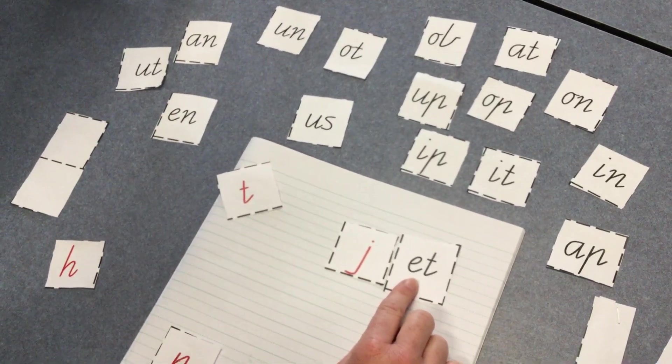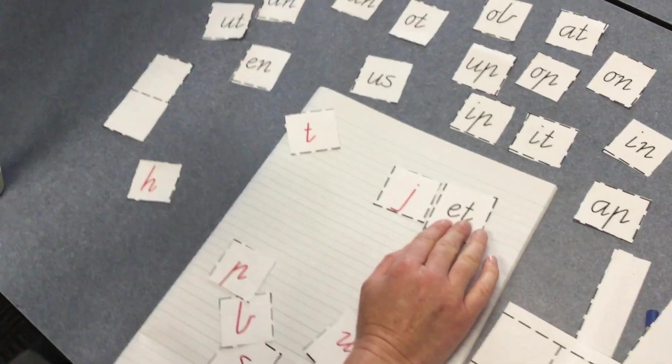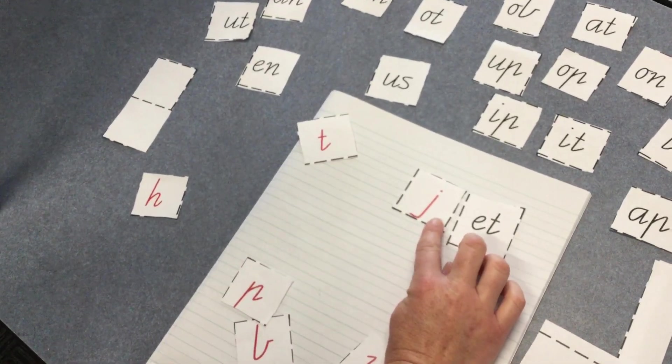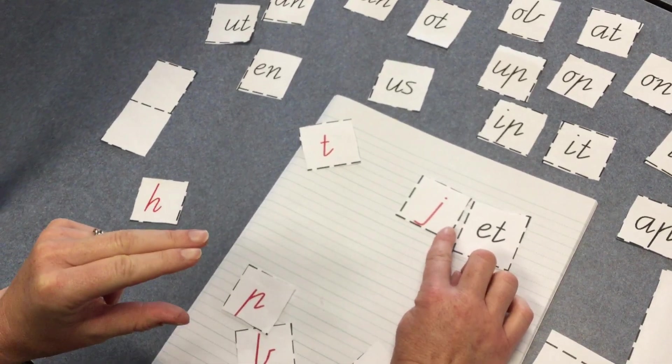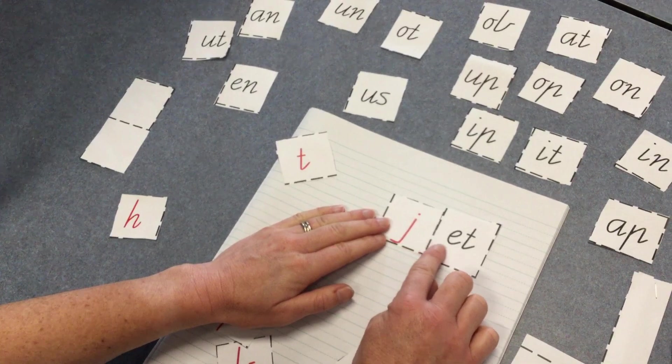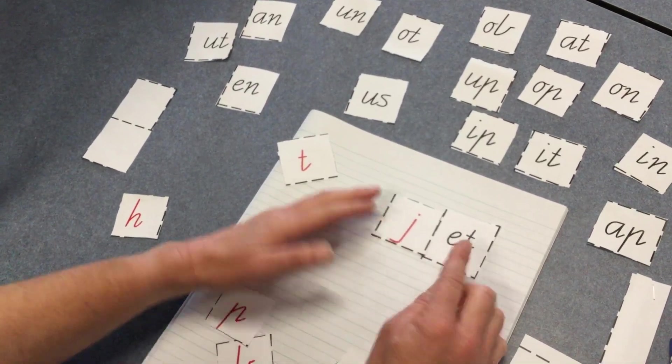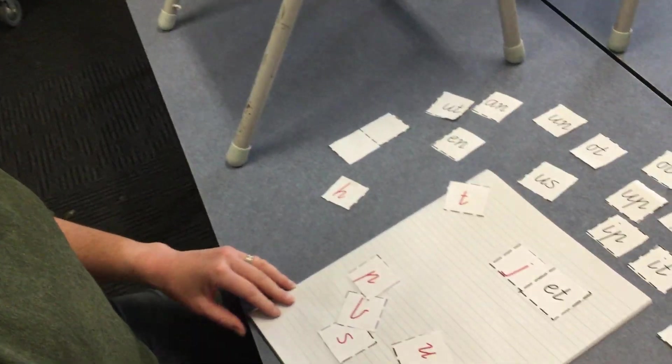But now I could try and put the J here. We know J makes a 'j' sound. I don't need to work this part out; I've already worked this part—it's 'et.' So now I'm going to add 'j-et.' It sounds familiar. I need to try and move it a little bit closer together: 'j-et, jet, jet, jet.' Is that a word? Yes it is.